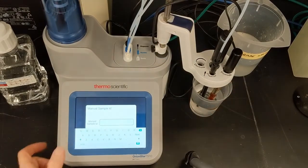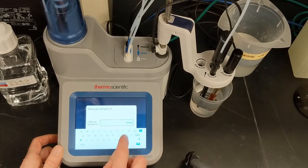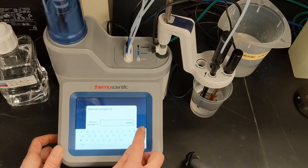Since I've chosen the Manual Sample ID option, I can type in the name I want saved in the log. I'll use Sample 2.